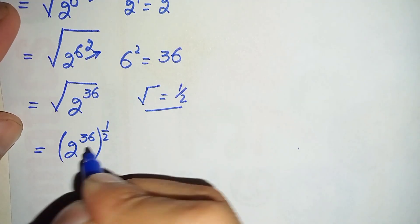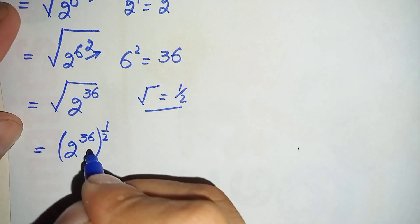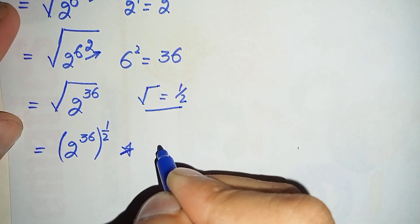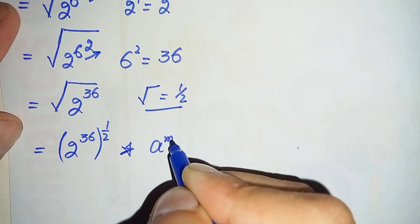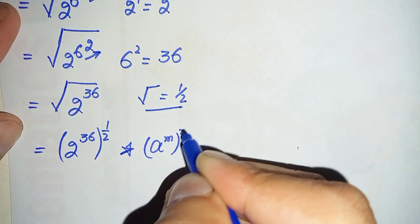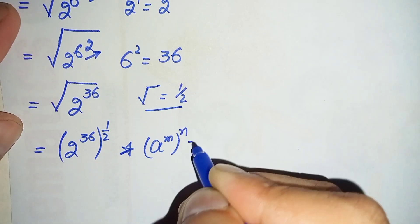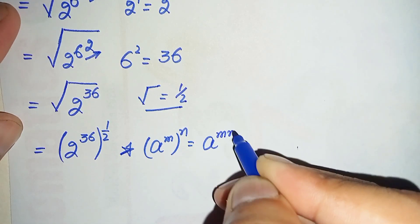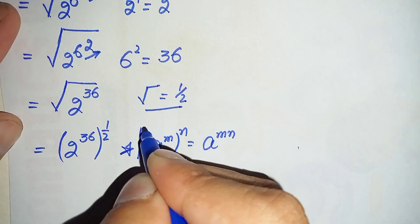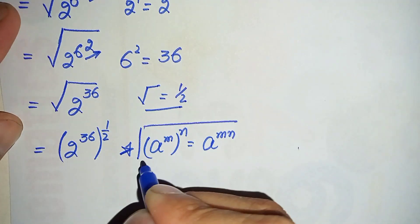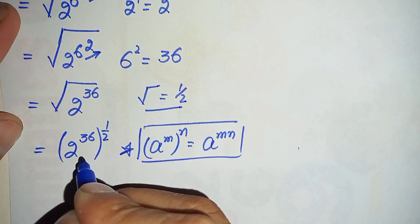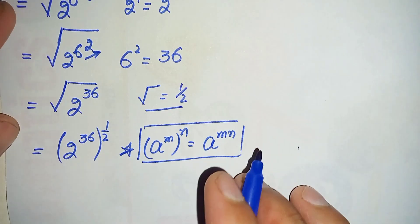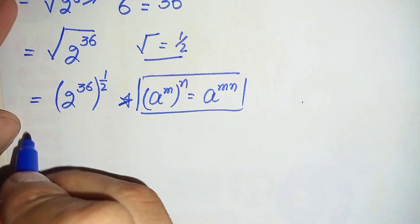This becomes 2 raised to power 36, raised to power 1 over 2. In the next step we will use an exponential math property: a raised to power m, raised to power n, can also be written as a raised to power m times n. Using this exponential property in this equation, we will multiply these two powers.